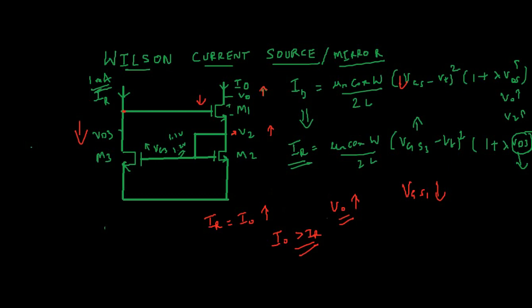But due to negative feedback, the IO output current reduces and again this condition fulfills that is IR is equal to IO.